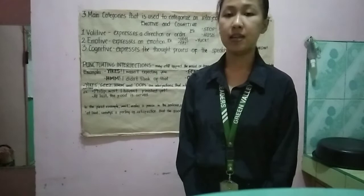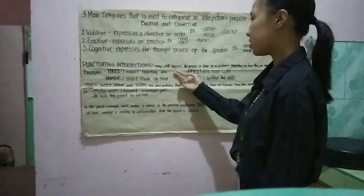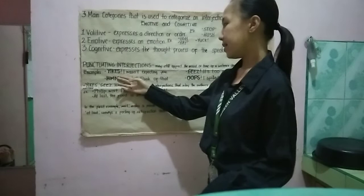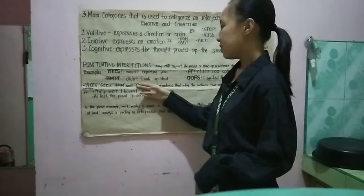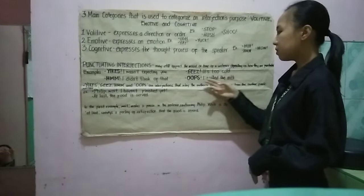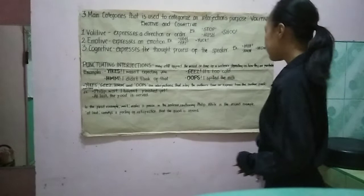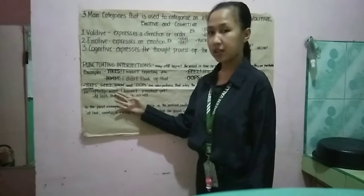Let's proceed to punctuating interjections. They may still affect the mood or tone of the sentences depending on how they are punctuated. Examples: 'Yikes, I wasn't expecting you.' 'Hmm, I didn't think of that.' 'Geez, it's too cold.' 'Oops, I spilled the milk.' Yikes, geez, and oops are interjections that relay the author's sense or express how the author feels. Another example: 'Philip, wait, I haven't finished yet.'